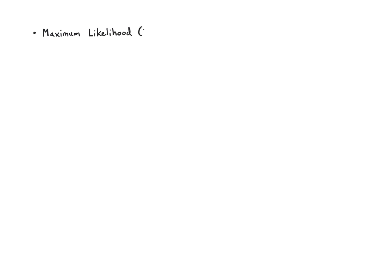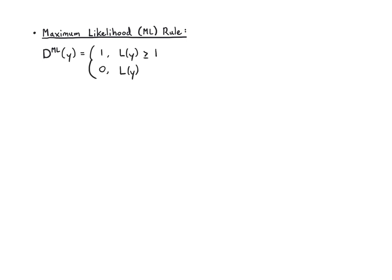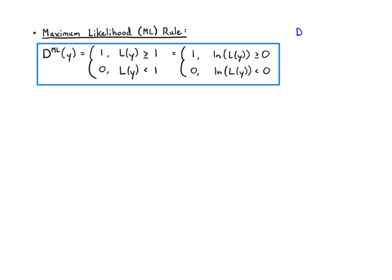The maximum likelihood rule is: once you've computed your likelihood ratio, output 1 if it's greater than or equal to 1, and 0 if it's less than 1. We can also talk about the log likelihood ratio, which is sometimes easier. For that one, we compare it to 0, because if you take the log of both sides you get log of 1, which is just 0.